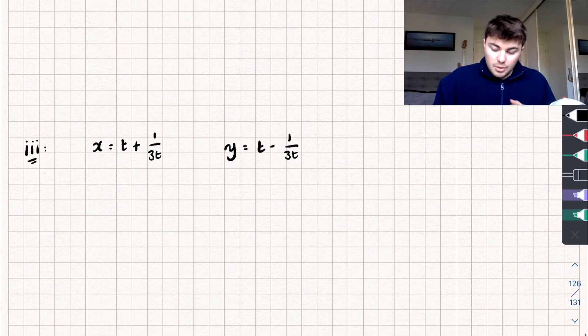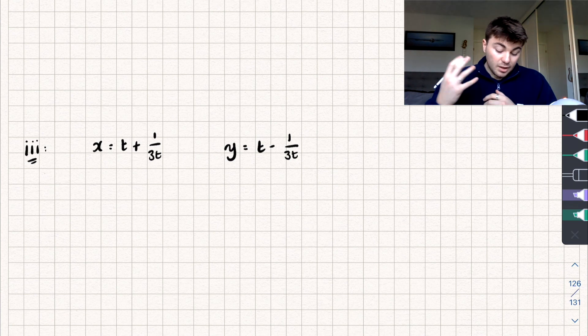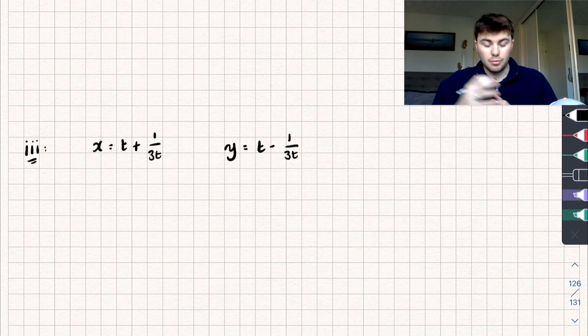Let's now look at the third type, which is slightly different. And so we've got x is equal to t plus 1 over 3t, and y is equal to t subtract 1 over 3t. And so rearranging this to make t the subject is going to be pretty tricky to do.